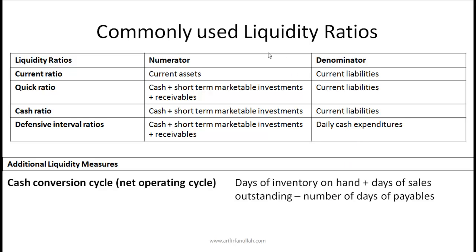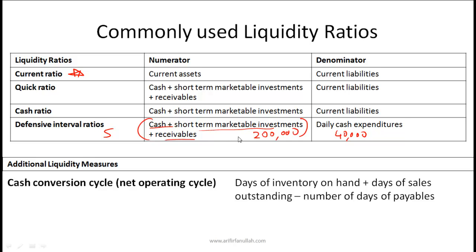Commonly used liquidity ratios: the current ratio is current assets divided by current liabilities. The quick ratio is more conservative and does not consider inventory. The cash ratio is the most conservative, taking only cash and short-term marketable securities divided by current liabilities. The defensive interval ratio gives a sense for how many days you can survive on liquid assets. For example, if cash, short-term marketable securities, and receivables total 200,000 and daily cash expenditure is 40,000, the defensive interval ratio is 200,000 divided by 40,000, which equals 5 days of liquid assets.